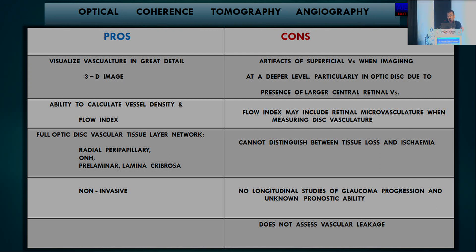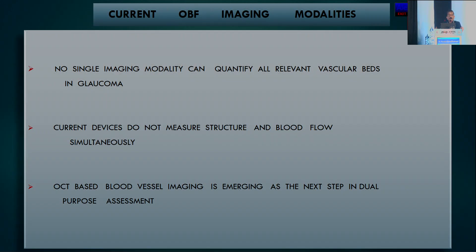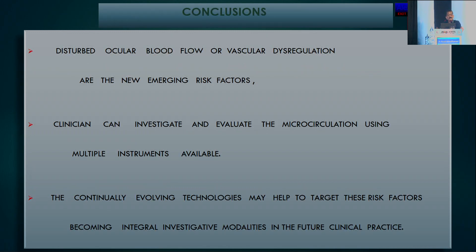No single imaging modality can quantify all relevant vascular beds in glaucoma. Current devices do not measure structure and blood flow simultaneously. OCT-based blood flow imaging is emerging as the next step in dual-purpose assessment. In conclusion, disturbed ocular blood flow and vascular dysregulation are new emerging risk factors. The clinician can investigate and evaluate microcirculation using multiple instruments available, and continually evolving technologies may become integral investigative modalities in future clinical practice.